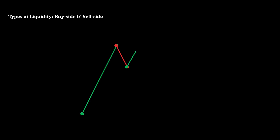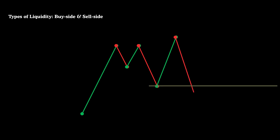In a bearish context, liquidity found below a low or a series of lows is considered sell-side liquidity. As price nears this point, bullish traders may enter long trades or defend existing long positions. Meanwhile, breakout traders will likely go short if the level is breached. The aggressive move designed to seize this liquidity is referred to as sell-side delivery. Algorithmic price delivery captures this liquidity by baiting both sides of the market, after which smart money typically enters long positions to target the buy-side liquidity.